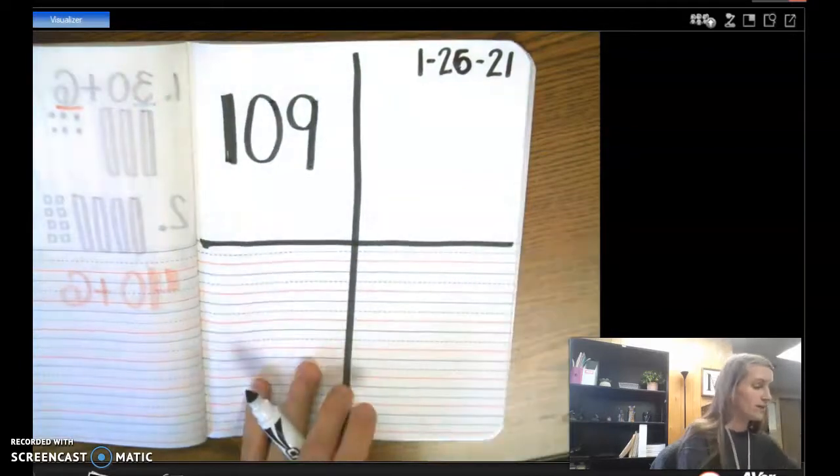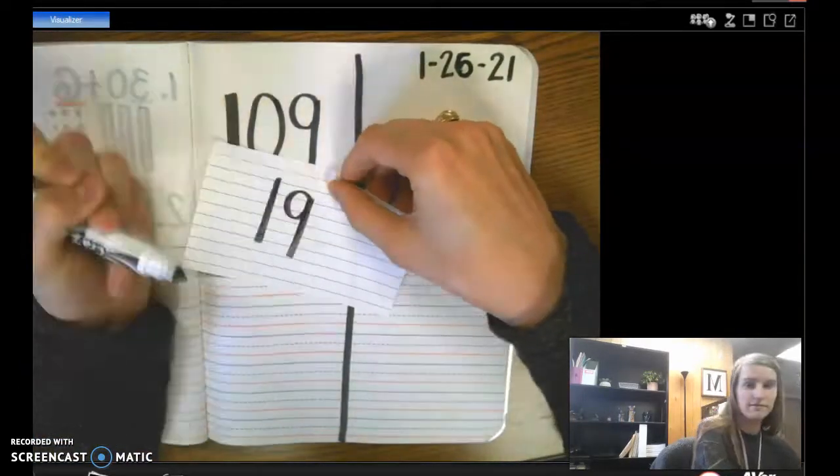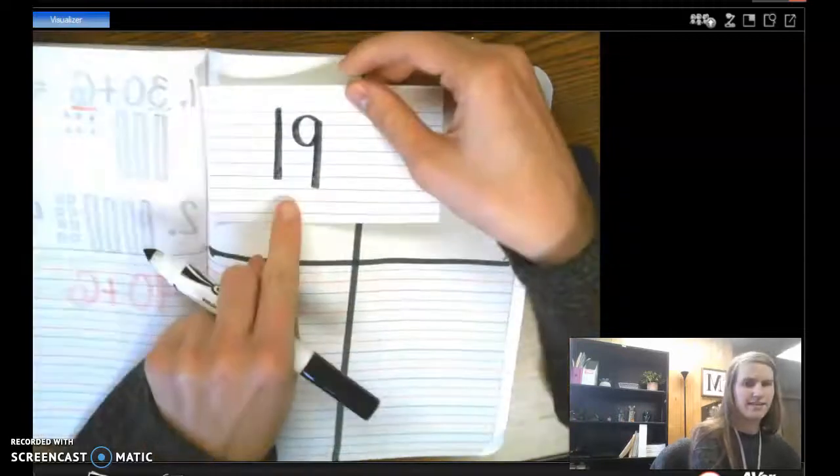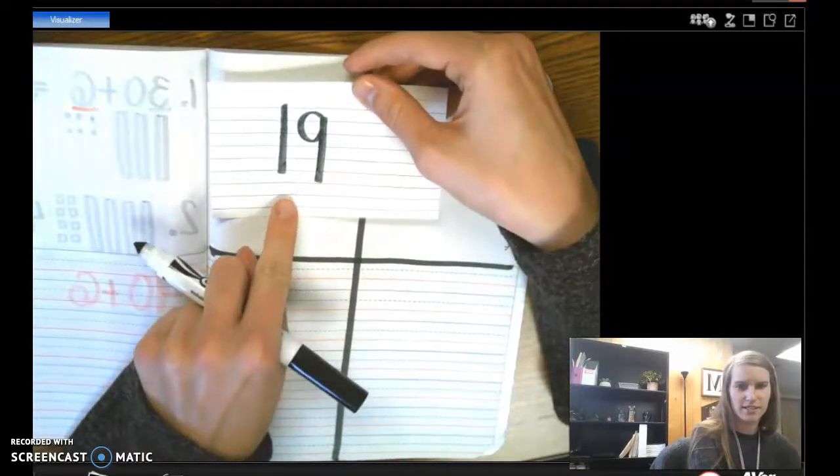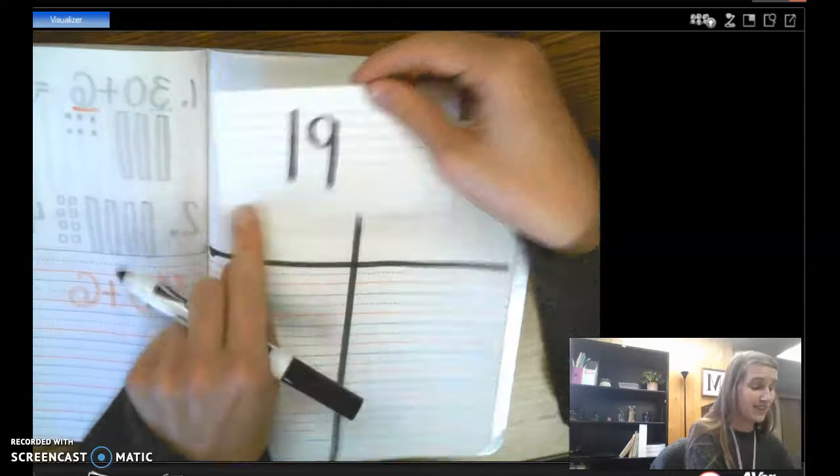If we had just written it as 19, that's not the number 109. We need to have that 0 in there.